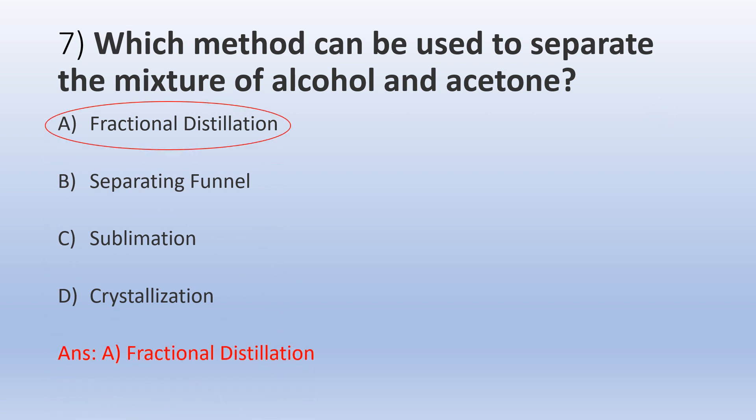The correct answer is A, Fractional Distillation. Fractional distillation is used to separate two volatile liquids that may be miscible with each other. Separating funnel is used to separate two liquids that are immiscible with each other so that it forms two different layers. Sublimation is used to separate two solids, and crystallization is mainly used for the purification of solids.